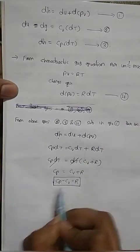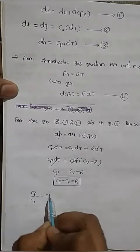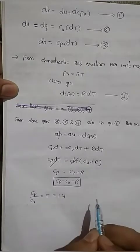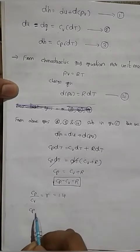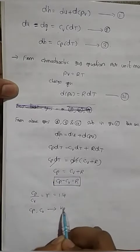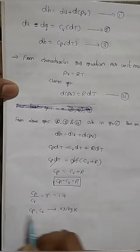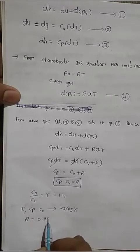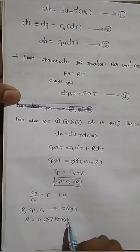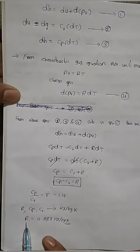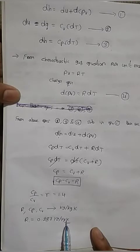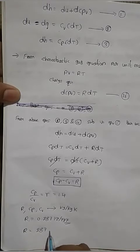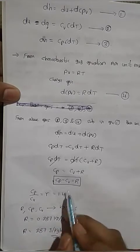We already know that the ratio of the two specific heats, Cp/Cv, is equal to gamma. For air, gamma is 1.4 and it has no units. The units of Cp and Cv are kJ per kg·Kelvin. R also has the same units. The value of R is constant at 0.287 kJ per kg·Kelvin for all gases — equivalently 287 J per kg·Kelvin.